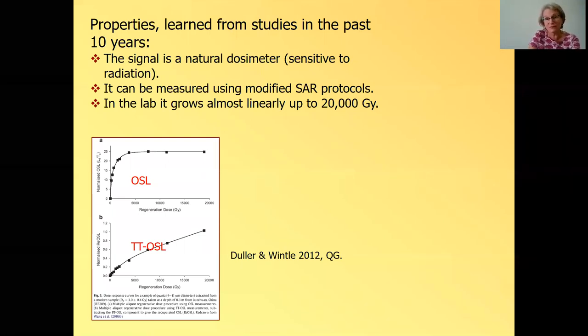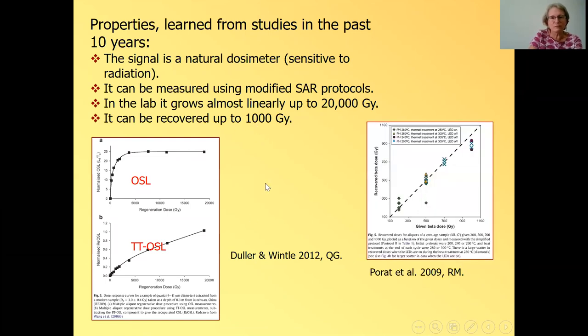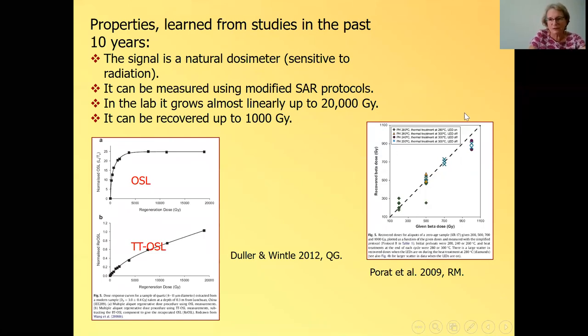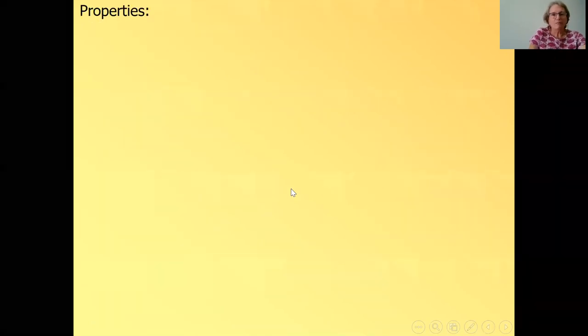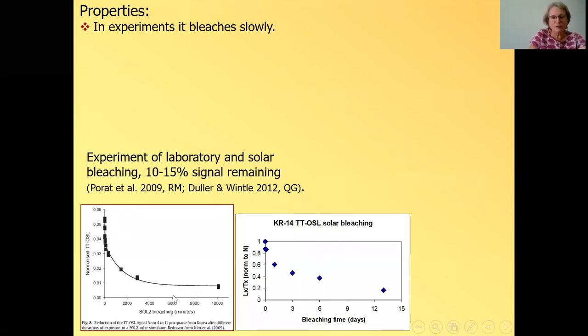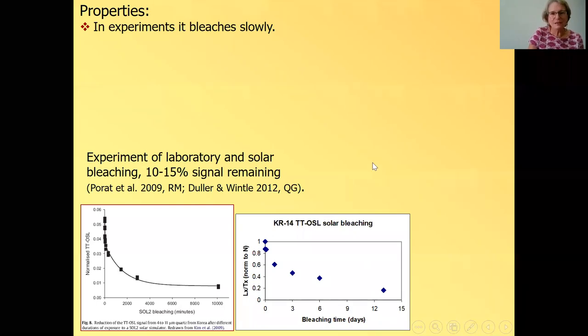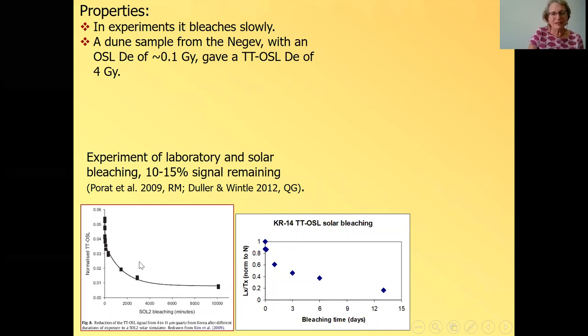So when this was published, it raised very high hopes. This is just a comparison between the OSL signal that we know saturated early and the TTO signal, which just grows and grows and grows. And other experiments show that it can be recovered, meaning a known laboratory dose can be measured up to a thousand grays. So in experiments, it bleaches very slowly. That's one of the major drawbacks. And here are two experiments, one done in a solar simulator. So it's a lamp that simulates the sunlight. And this is over seven days. And the second one, this experiment was done in the sun and it's over almost 14 days, but it's more or less equivalent time, because think of the sample outside in the sun that during the night, it's not bleached. So it's more or less equivalent. And you can see that even after such long bleaching, you have between 10 and 15% of the signal remaining.